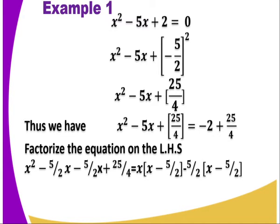We have example 1, where we have x squared minus 5x plus 2 equals 0. The next step now is to create an incomplete equation. I should make the equation incomplete. The first equation is complete, but now I should make it incomplete. How do I make it incomplete? I will take my 2 to the other side. So it becomes x squared minus 5x equals negative 2.